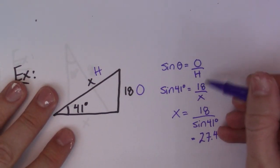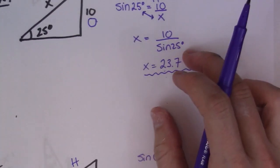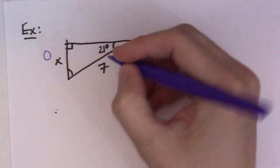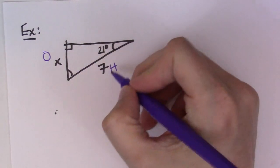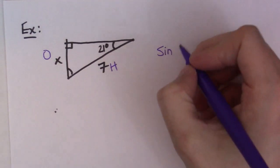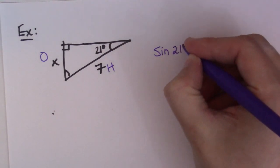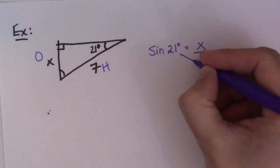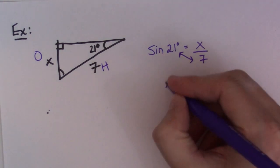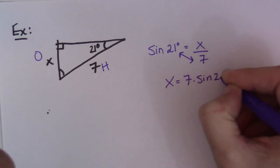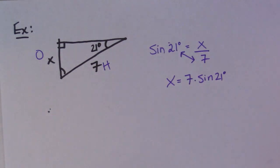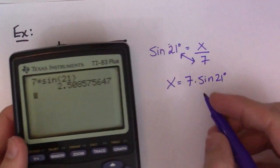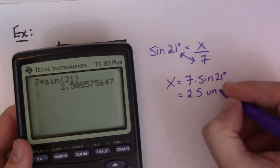The other scenario is where X is on top — when the opposite side is unknown and the hypotenuse is known. This is still sine because we're looking for the opposite, we have the hypotenuse, and we're given the angle. Sine of 21 degrees equals opposite X over hypotenuse 7. We don't need the switcheroo here — just cross multiply: X equals 7 times sine 21. I prefer to write sine 21 directly rather than converting to a decimal so I can enter it straight into the calculator. 7 times sine 21 gives 2.5 units.